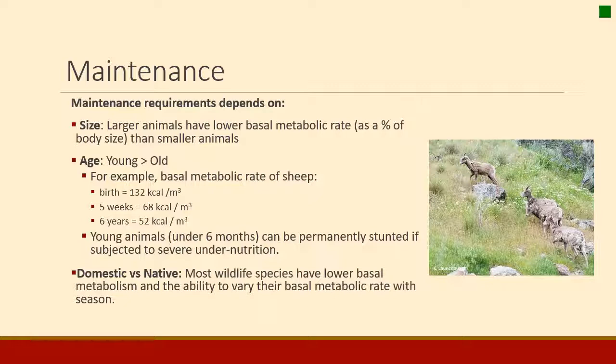Age also makes a difference. The amount of energy animals need to just survive varies throughout their life — it starts out very high and decreases as they get older. In sheep, a lamb at birth required 132 kilocals per cubic meter of body size. At five weeks that amount went down almost by half to 68 kilocals per cubic meter, and at six years old adult sheep only required 52 kilocals per cubic meter. So as animals get older, if they are eating enough, they'll get fatter because a lower proportion of their daily energy must go to maintenance.